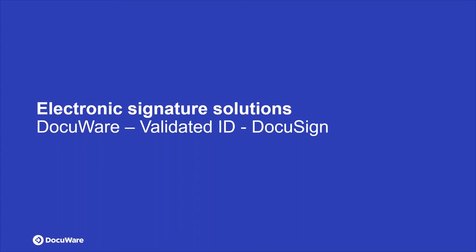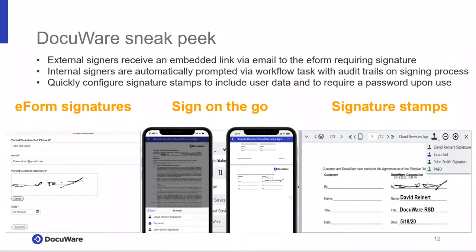Getting into the solutions before we dive into the demo: with DocuWare you can do signatures internally or externally. I can send an email and you'll get a link to a document that needs to be signed. You can sign through a form or a stamp. Internally, you can have an approval workflow where you automatically send a document to get approved, and when you attach your signature it will include your user ID and the date and time you signed — giving you that audit trail. Once signed, the document is locked. It's built into the solution, super easy, super flexible, and very robust.